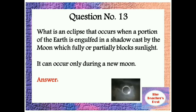Question number 13: What is an eclipse that occurs when a portion of the Earth is engulfed in a shadow cast by the moon, which fully or partially blocks sunlight? It can occur only during a new moon.